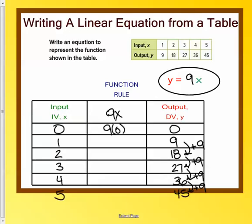Because the input is the x and the output is the y. So 9 times 0, 9 times 1, and so on and so forth to give us our outputs.